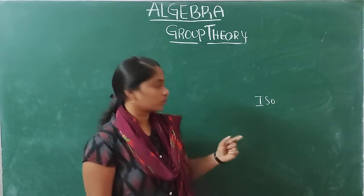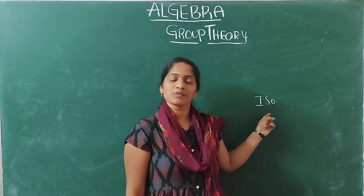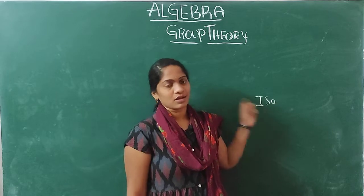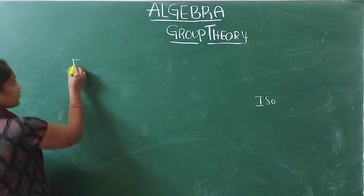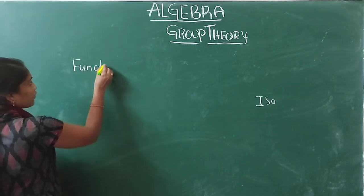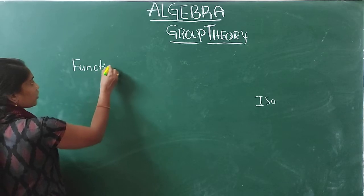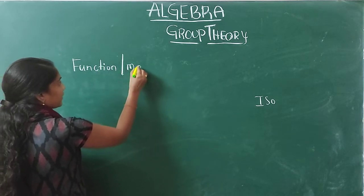If you know these five definitions, then you can do the isomorphism theorems very easily. So now let's start. The first definition is function — you can also say mapping.